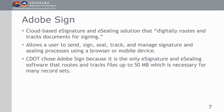Adobe Sign is a cloud-based e-signature program for e-sealing documents. It digitally routes and tracks documents for signing automatically. It allows users to send, sign, seal, track, and manage signatures in the sealing process using any mobile device — a cell phone, browser, tablet, or office computer. You're not limited to responding to signature requests at the office; you can be anywhere using any mobile device as long as you have internet access.